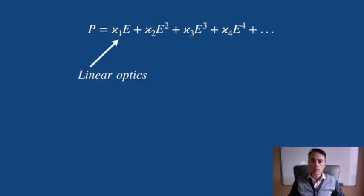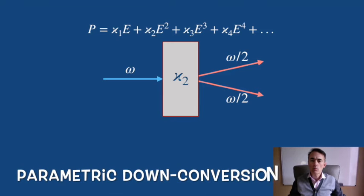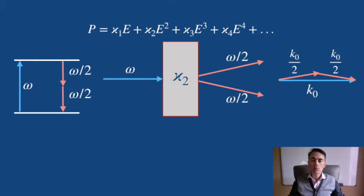For the second term, we have seen parametric down-conversion, where an incident photon of frequency omega is transformed into two photons of frequency omega over two by interaction with the non-linear medium.